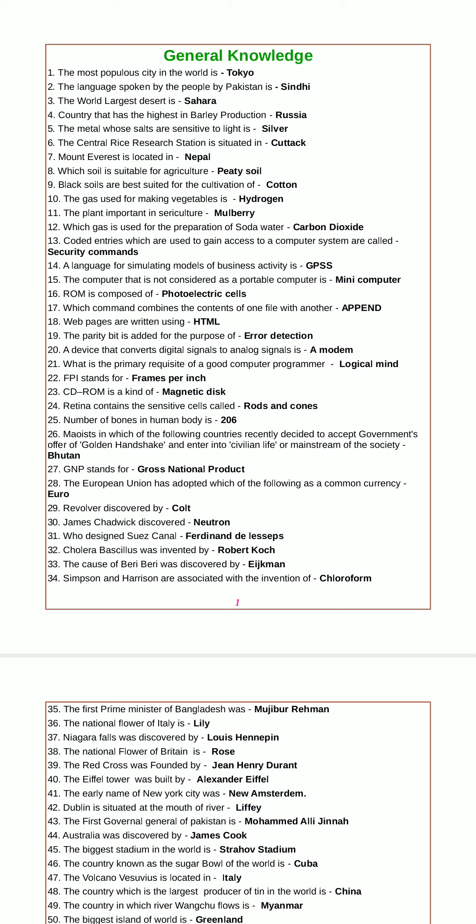The gas used for making vegetables is hydrogen. The most important insect in sericulture is mulberry silkworm. The gas used for preparation of soda water is carbon dioxide. Coded entries which are used to gain access to a computer system are called security commands.